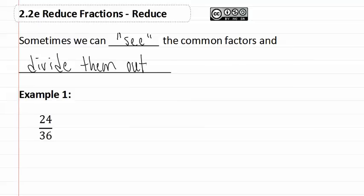This is especially easy in smaller numbers, as we can see in example one where we have 24 over 36. I know that both of these are even and I can therefore divide both by two. So if I divide each one by two, 24 divided by two is 12 and 36 divided by two is 18.